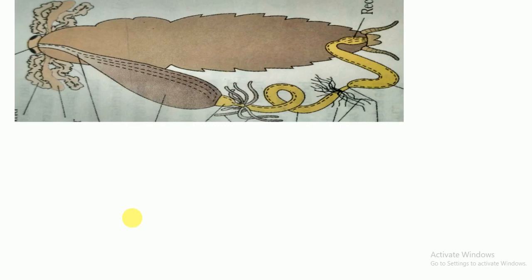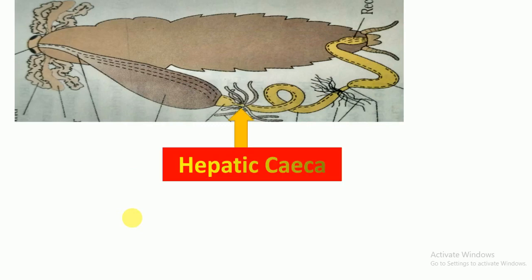At the junction of the foregut and midgut, six to eight blind tubules called hepatic ceca are present. The hepatic ceca secrete digestive juices.